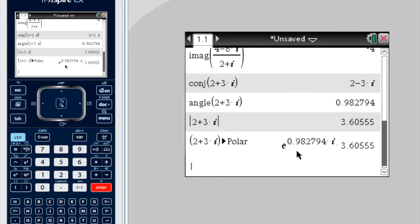Now, if you remember, that's actually just another way. That's the Euler form to write the mod arg form. So that is equivalent to 3.6 outside of cos of that angle plus i sine of that angle.